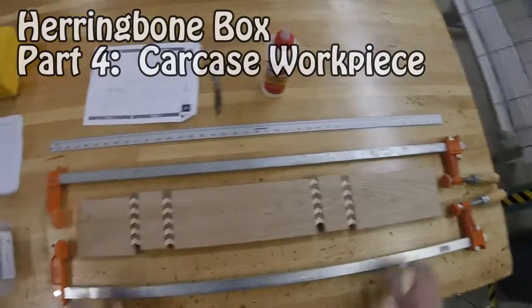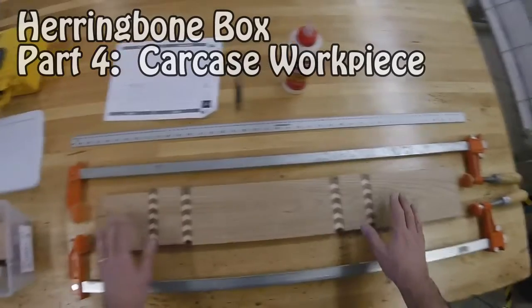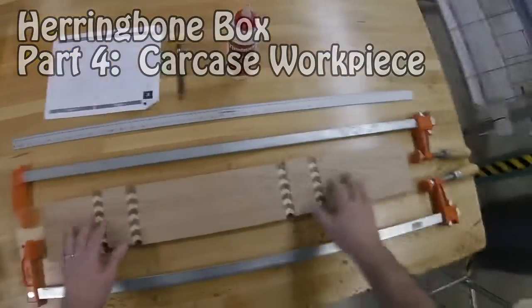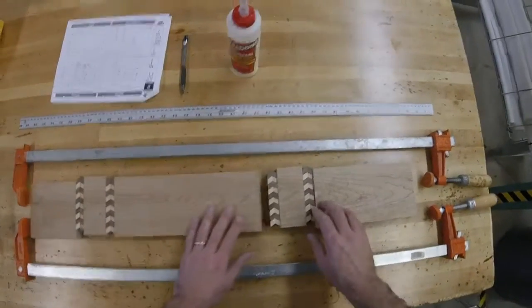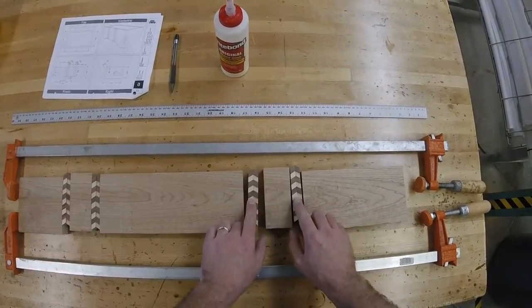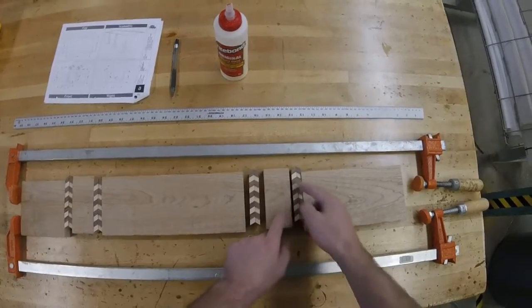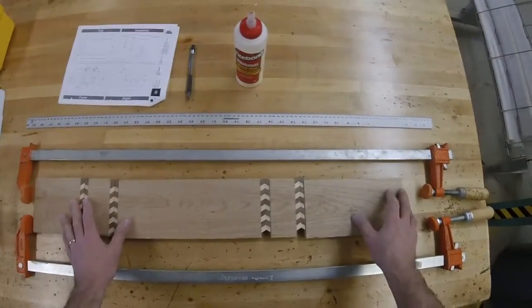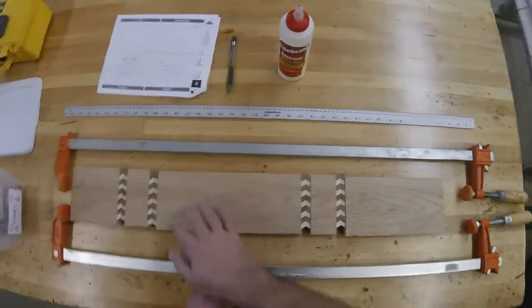All right, here we are with our herringbone box and we're ready to start assembling the carcass stock. Essentially, you've done so far is you have your herringbone pieces. You should have four sets of these, a total of eight individual pieces all together. And back in one of the earlier videos, we actually labeled the pieces of our box.